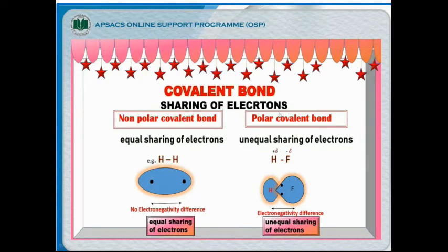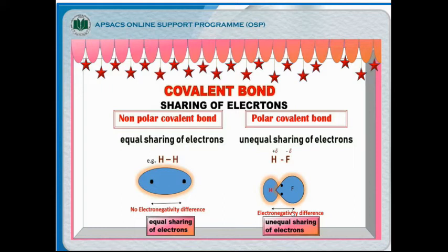Covalent bonds are divided into two categories according to the sharing of electrons: non-polar covalent bonds and polar covalent bonds. Non-polar covalent bonds involve equal sharing of electrons and both atoms must be the same — there is no electronegativity difference. In polar covalent bonds, there is an electronegativity difference and unequal sharing of electrons.